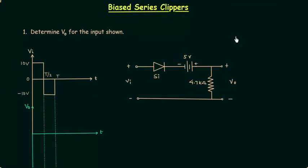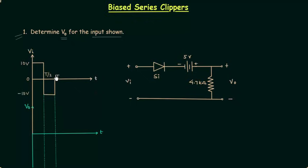In the previous lecture I explained how to deal with unbiased series clippers. Now we will solve problems based on biased series clippers. In the first problem we need to determine VO, the output voltage for the input shown. This is the input waveform and we have to plot the output waveform.